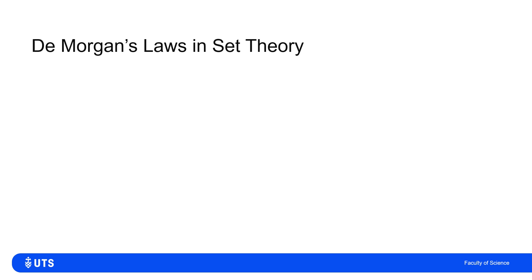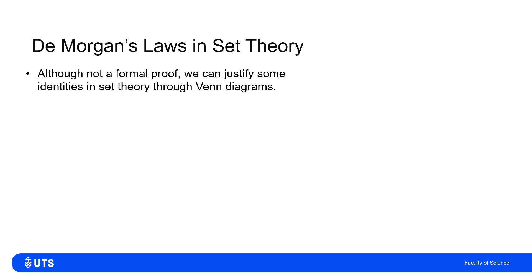What we saw was a very formal proof in set notation — we assumed an element was in one side and showed it was in the other, demonstrating both sides are subsets of each other. That's a rigorous mathematical proof. Sometimes, however, we don't need that level of rigor if we're just trying to convince ourselves of the truth of an equivalence, and we can sometimes do that visually through Venn diagrams.